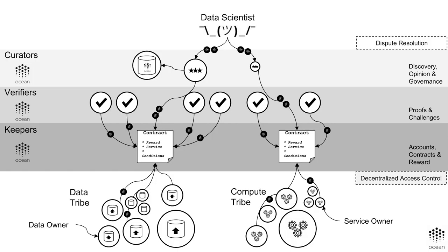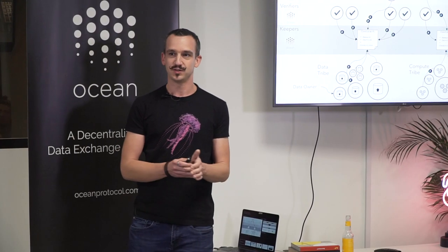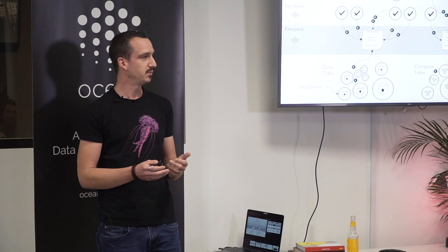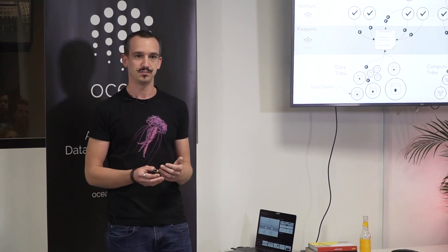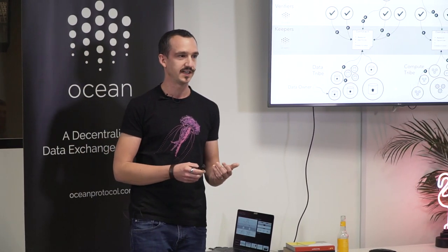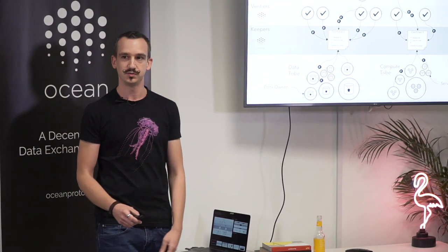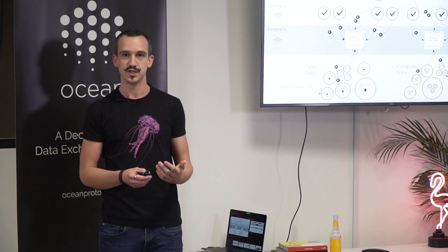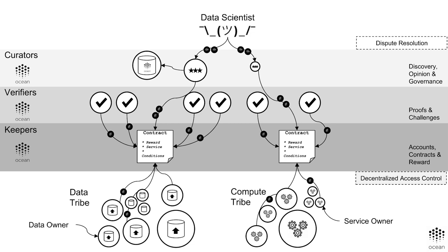That's what Ocean wants to build, and this is what we are building right now. Ocean is about getting big data closer to AI. Most corporates and most companies have big data, and those startups that want to build AI don't have data. The idea of Ocean Protocol is to get the data closer to AI, to accelerate the creation of AI. And this is what we are doing.